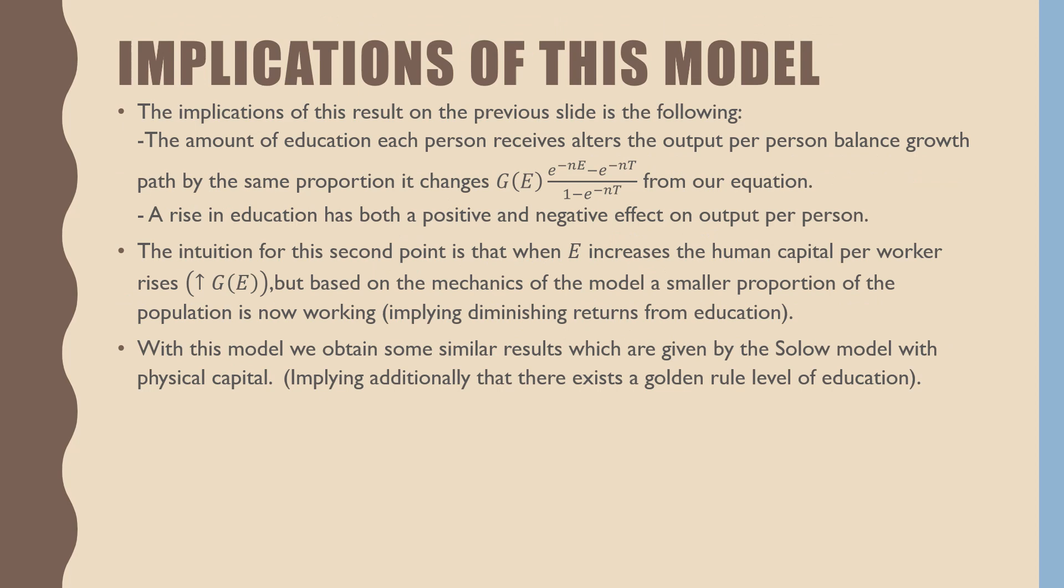So, the implication of this result from the previous slide is the following. The amount of education each person receives alters the output per person balanced growth path. By the same proportion, it changes this G as a function of capital E education times e raised to the power of negative nE minus e raised to the power of negative nT all over 1 minus e^(-nT) from our equation. A rise in education has both a positive and negative effect. That's the other point.